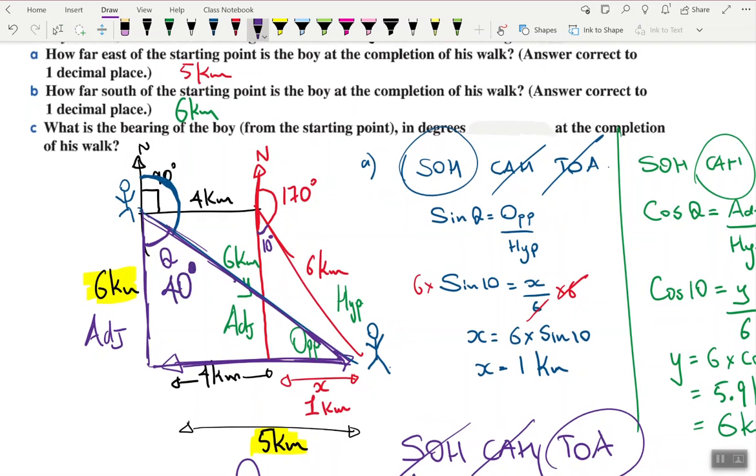I can do 180 take 40 to find out what the true bearing of the boy from his starting point is. So 180 minus 40 gives me 140 degrees. That is my answer to part c.